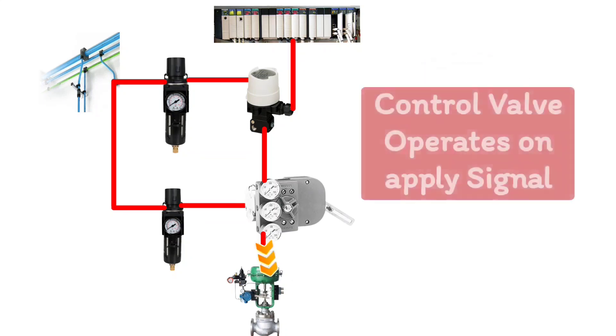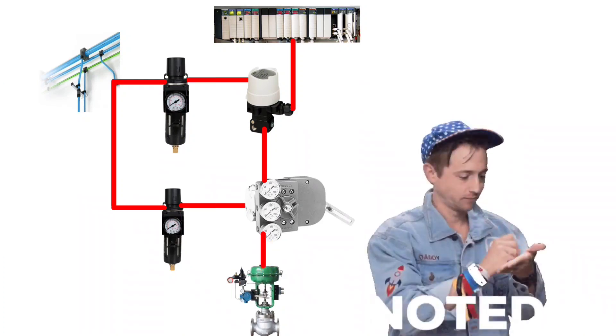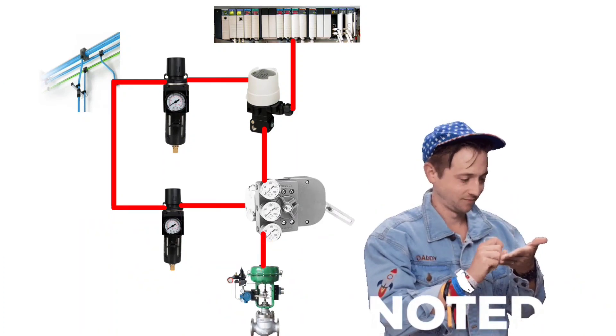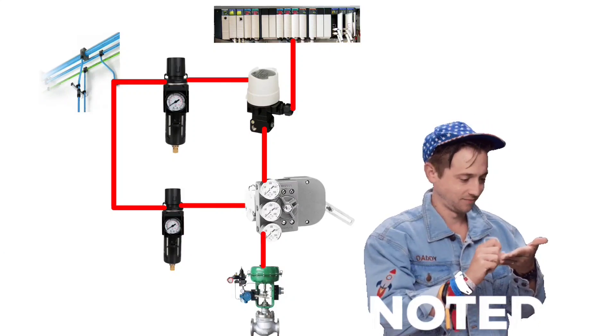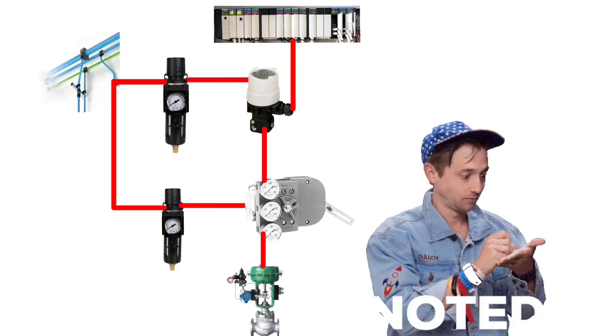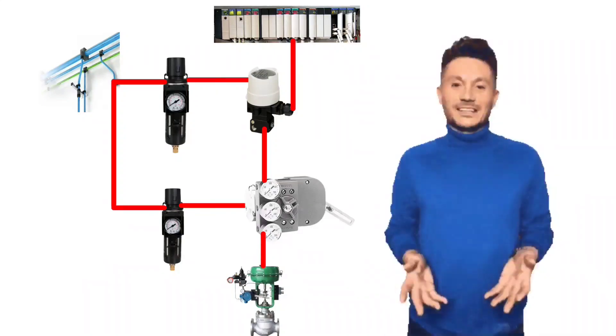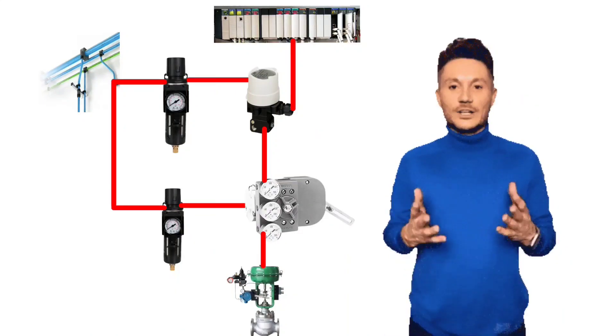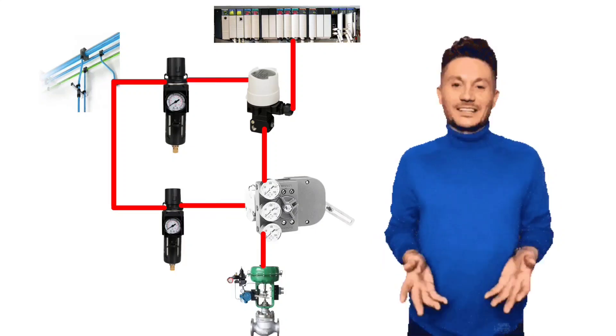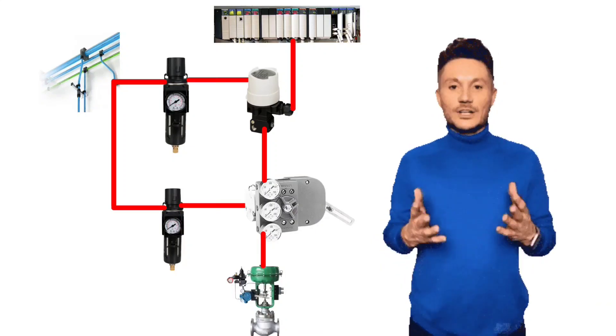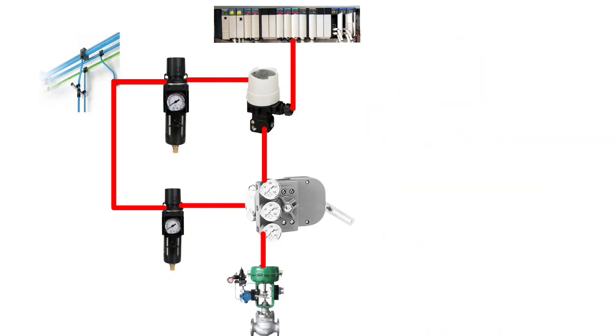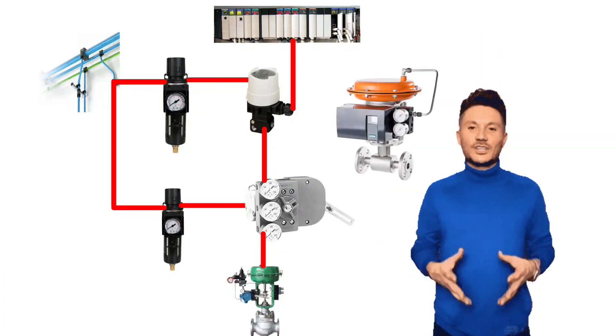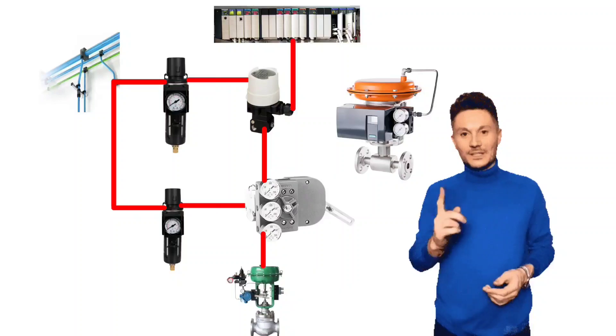Control valve operates when signal is given because control valve is the final element in this control process. Hence it is also called final control element. So from here your doubt is cleared why control valve is called the final control element. So friends, in this way the control valve operates according to the 4 to 20 mA signal.